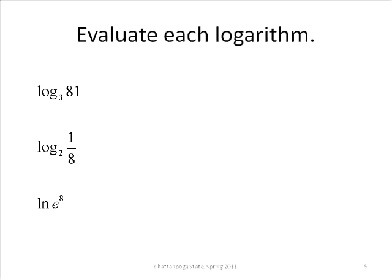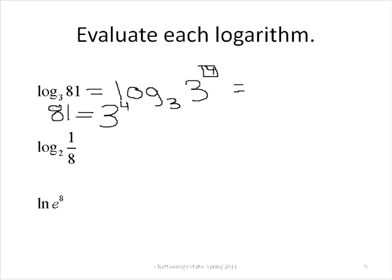So here, we want to try to write these numbers using powers. If we have the log base 3 of 81, we want to write that as the log base 3 of 3 to some power, and that power will be our answer. If we think about 81, and we can try different things on our calculator, to raise 3 to the 2nd power, 3 to the 3rd power, we find that 81 is 3 to the 4th power. So the log base 3 of 81 is the same as the log base 3 of 3 to the 4th power, and our answer here would be 4.